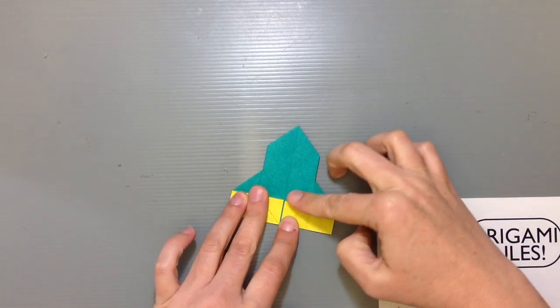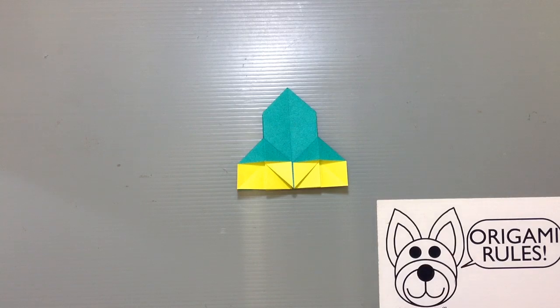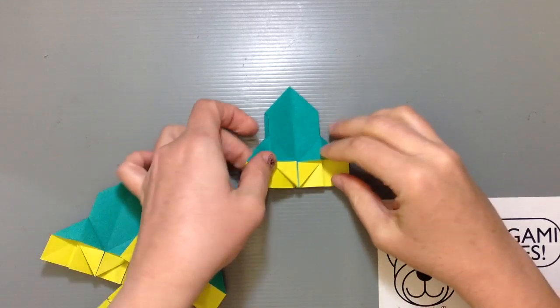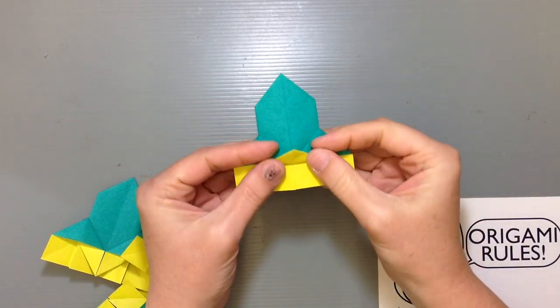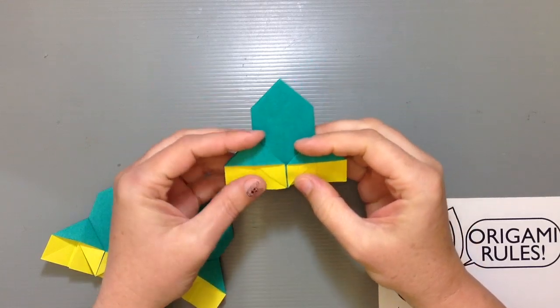And that gives us the finished piece of the castle there. That's as far as we're going to fold. Like I said, the normal castle does have two more folds where you take this flap and fold it up on both sides. We're just going to leave it the way it is here.